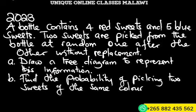We are asked to draw a tree diagram to represent this information and find the probability of picking two sweets of the same color. The total marks for this question was 10 - five marks for the tree diagram and five marks for finding the probability.